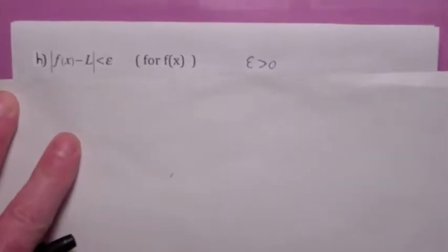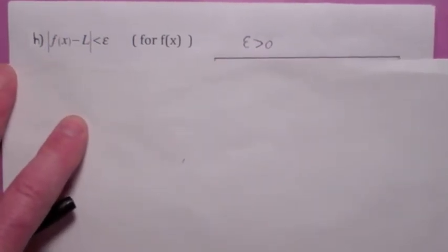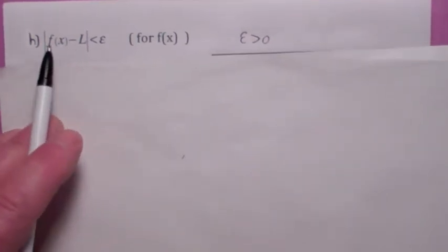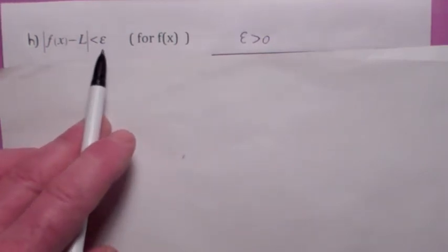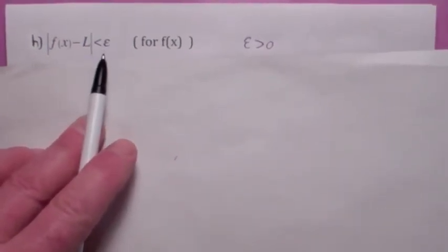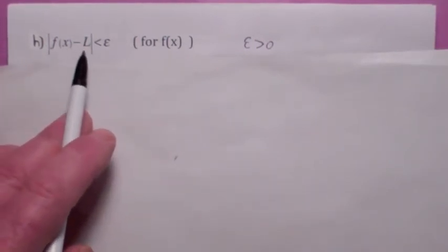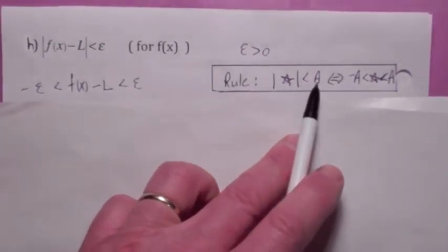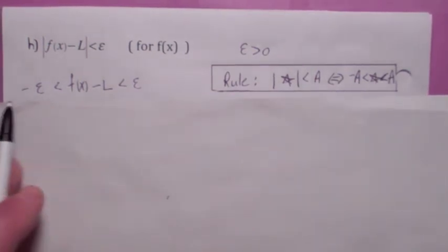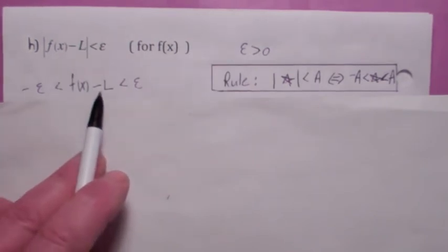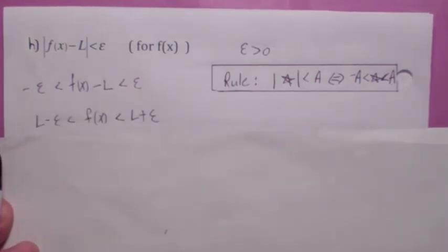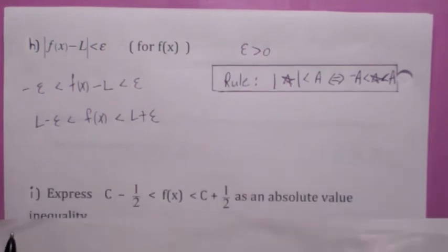Now why are we doing this? Because we're going to use this technique of absolute value inequalities to define the formal or precise definition of limit. Let's solve this absolute value inequality for f of x. Epsilon is just a positive constant. If you have the absolute value of this blob is less than epsilon, then what's inside is between negative epsilon and epsilon. So you could say f of x minus L is between negative epsilon and epsilon. Solving for f of x, you would add L to all three sides, and then you're done.